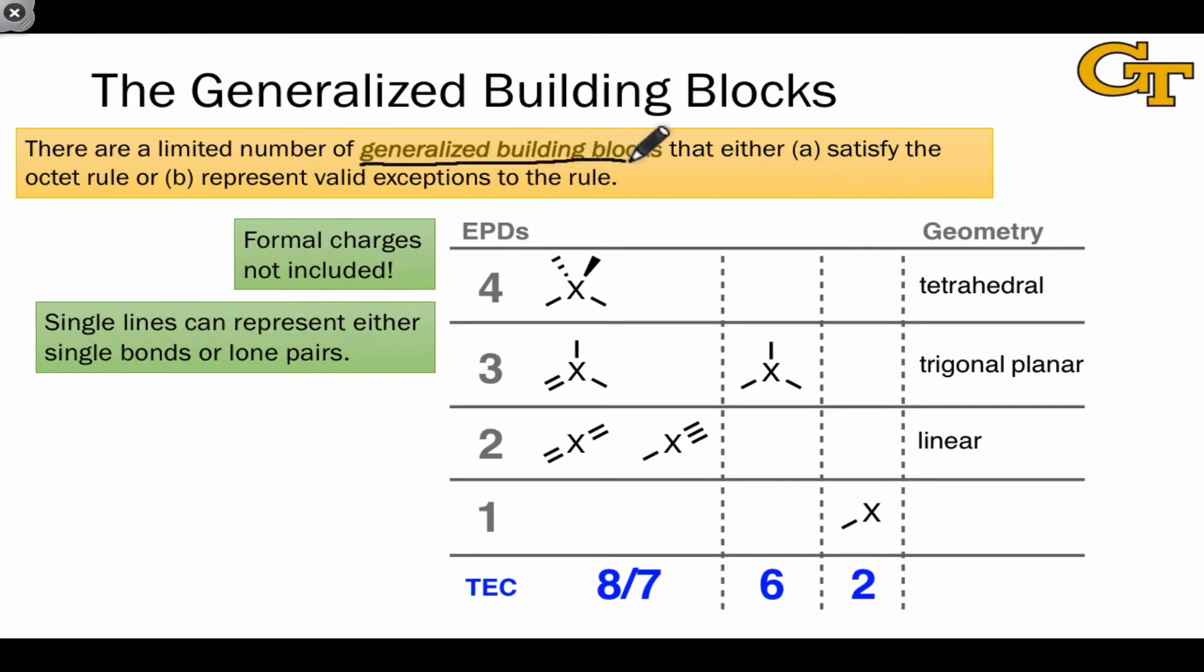We call these the generalized building blocks. These are the building blocks of organic structure that either satisfy the octet rule or represent valid exceptions to the rule, such as the 6-electron building blocks we looked at in the last video.